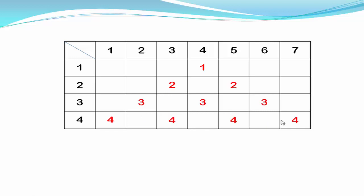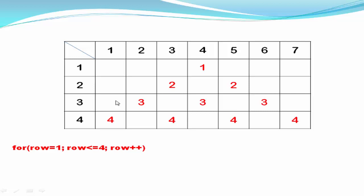To print this format we need three loops. One loop is for rows — how many rows you want to print. If you want to print four rows, the loop would be: for row equal to one, row less than or equal to four, then row plus plus. The next loop is for spaces. You can see that before printing numbers, some spaces are printed in each row. In the first row three spaces are printed, in the second row two spaces, in the third row one space.